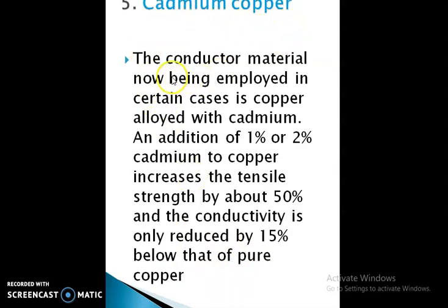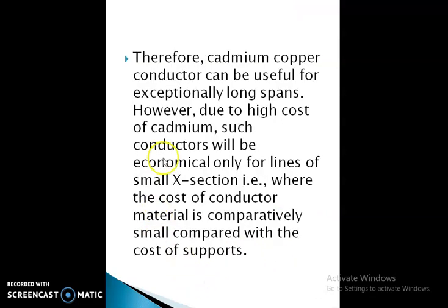The fourth type is cadmium copper. The conductor material now being employed in certain cases is copper alloyed with cadmium. An addition of one to two percent cadmium to copper increases the tensile strength by about fifty percent, while the conductivity is only reduced by fifteen percent below that of pure copper. Therefore, cadmium copper conductors can be useful for exceptionally long spans. However, due to the high cost of cadmium, such conductors are economical only for lines of small cross-sections, where the cost of conductor material is comparatively small compared with the cost of supports.